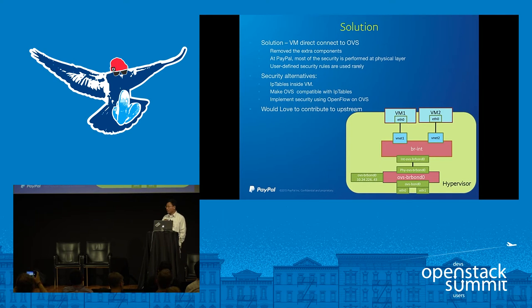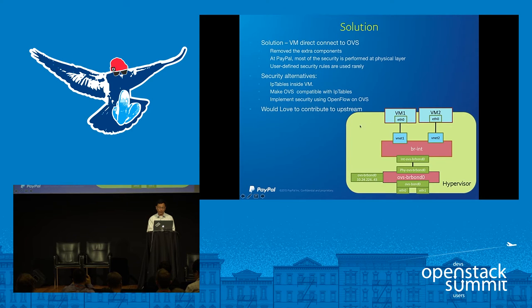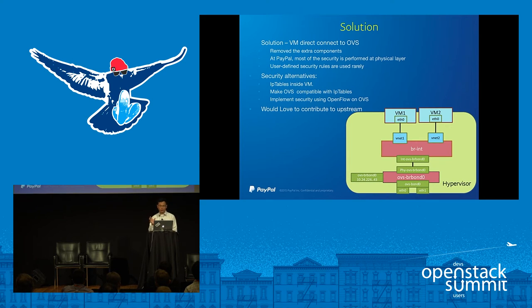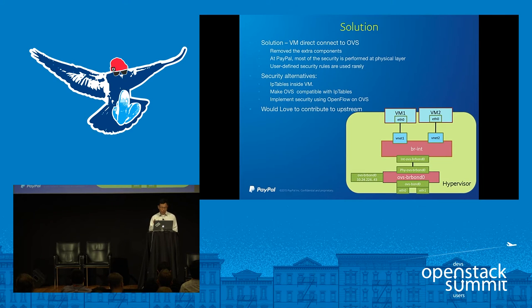Our solution is we don't want any of the extra components. We just want to connect the VM directly to OVS. Here is the more simplified model that we use inside PayPal. We removed those components. The immediate question is how do you handle security? Basically, at PayPal, most of the security is done at the physical layer using physical hardware. User-defined security rules are very rarely used. Looking forward, if you want to implement security, we actually have multiple alternatives.